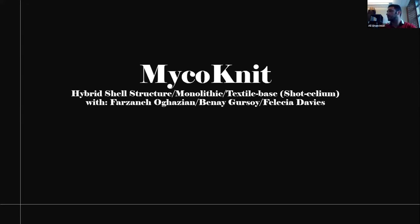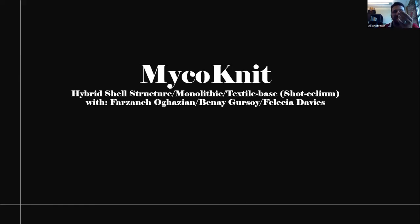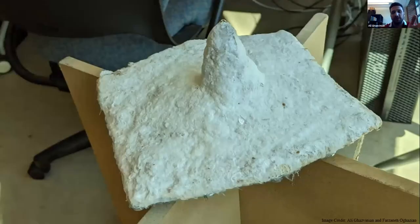The next project I'm currently starting is Myconite — using mycelium as a hybrid structure with textile-based materials. We want to have a monolithic structure, and like shotcrete, we're thinking of something like shotting mycelium onto the textile — I call it 'shotcelium.' This will be done with friends Farzone and faculty member Felicia here, and we'll talk about it in the near future. The first prototype is in hand, and Farzone may join us in an upcoming session to talk about this.